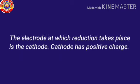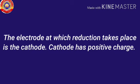Similarly, the electrode at which reduction takes place is the cathode. And cathode has a positive charge. Copper accepts two electrons from the zinc ion and becomes copper atom.